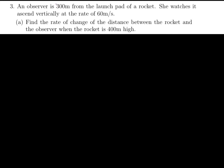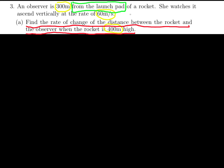Our CUBE approach says let's circle our numbers and variables if they're here. In this case we just have numbers, so we've got: the observer is 300 meters, it's ascending at a rate of 60 meters per second, and it is 400 meters high. From the launch pad is a distance, so that really is incorporating a mathematical idea — it's going to be a variable in our case.